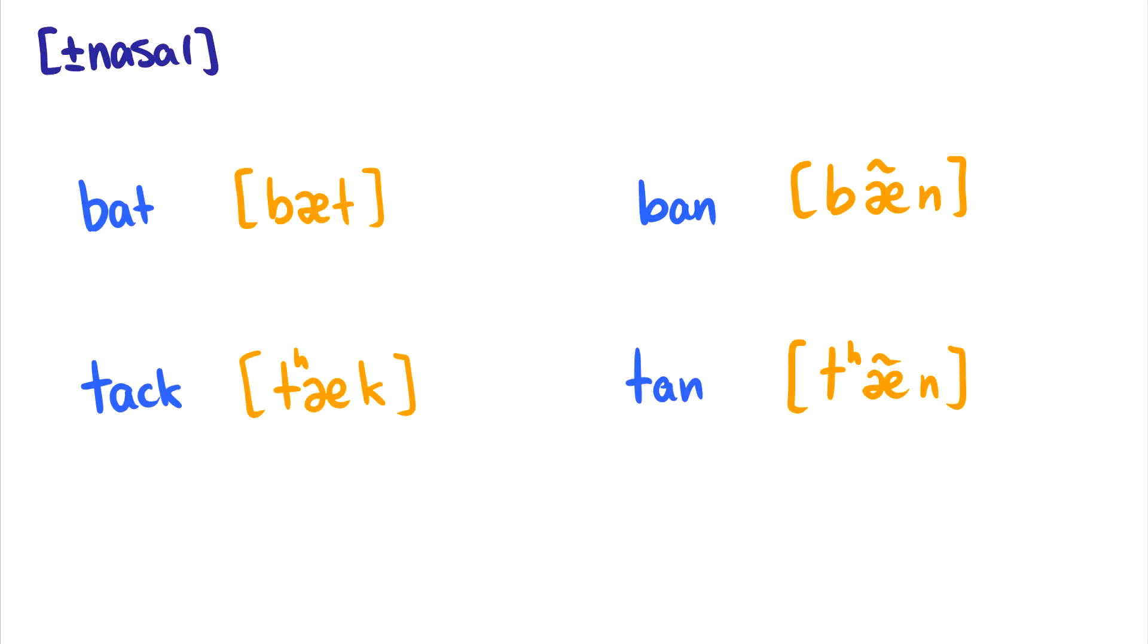The final feature is plus or minus nasal and this is used for consonants and for vowels. You're thinking wait a second, nasal vowels? I speak English, I don't speak French, we don't have nasal vowels in English. But oh no you do. And here's a nice exercise in allophones. Here's some words: bat, ban, tech, and tan.